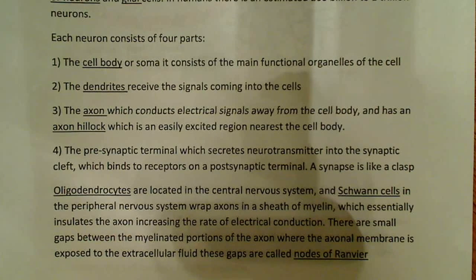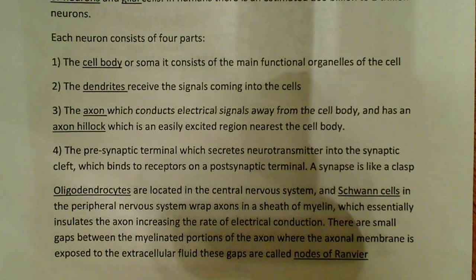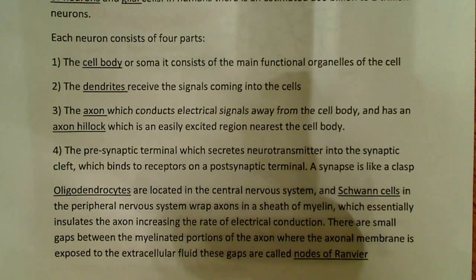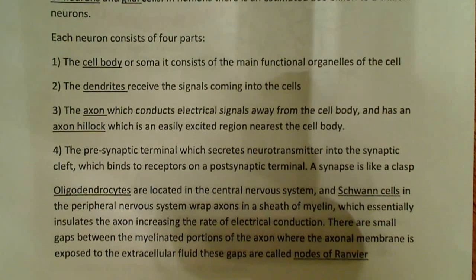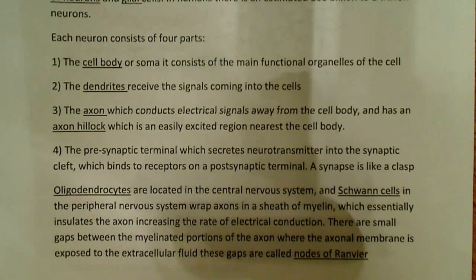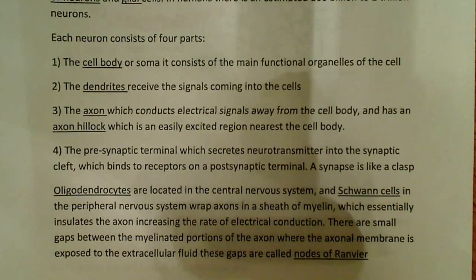The second part is the dendrites. Dendrites are like outgrowths from the cell body, and they receive signals coming into the cell — from other neurons or different parts of the body, different sensory systems — allowing the body to make adjustments.